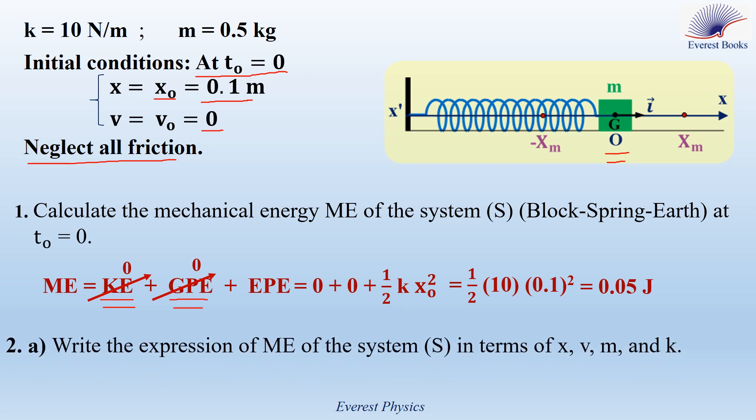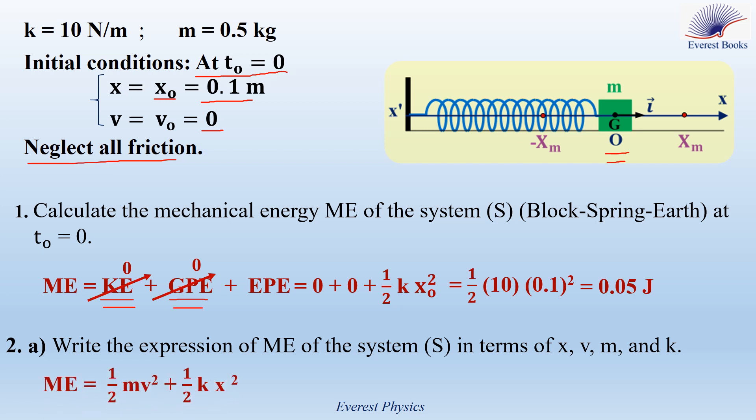Part 2A: Write the expression of ME of the system S in terms of x, v, m, and k. In general, ME equals KE plus GPE plus EPE. But because GPE is always 0, since G is always at the reference level of gravitational potential energy, we have ME equal to KE plus EPE, which is one half mv squared plus one half kx squared.